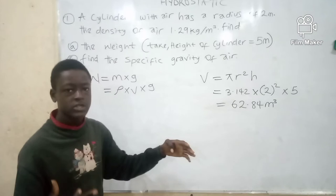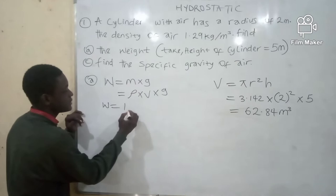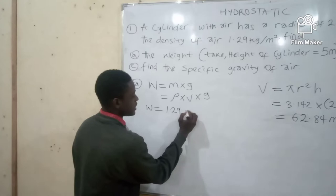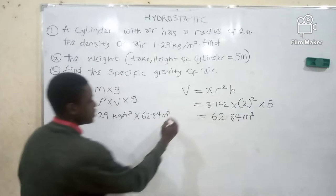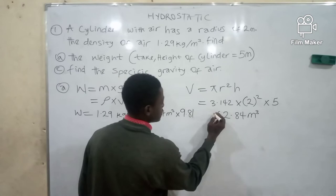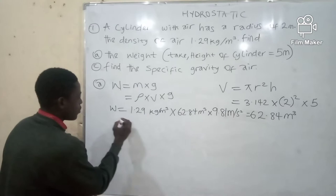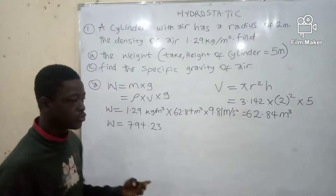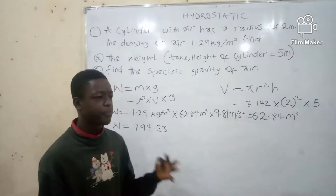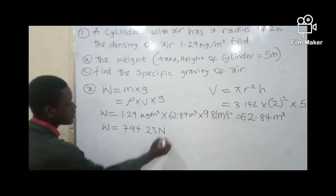We have our density as 1.29 kg per meter cubed. So we do direct substitution into the formula for weight. Our weight is equal to 1.29 kg per meter cubed times our volume of 62.84 meter cubed times gravity of 9.81 meters per second squared. Now, multiplying these all to find our weight, our answer is 794.23. The unit for weight is Newton. We all know that SI units are very important in solving physics questions.